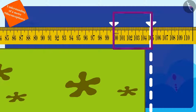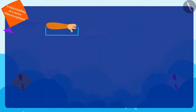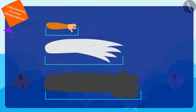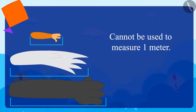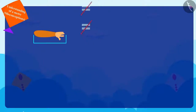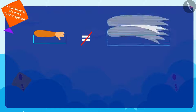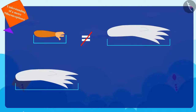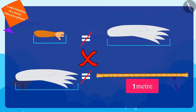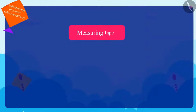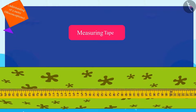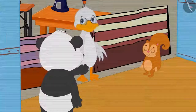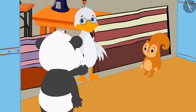Chanda explained to Chacha and Golu that the length of one arm varies for everyone, so they cannot use it to measure one meter. For example, the length of her one arm is not equal to the length of uncle's one arm, and uncle's arm length is not the same as one meter. She told uncle that he should measure the material using his measuring tape. Both Golu and uncle understood this.